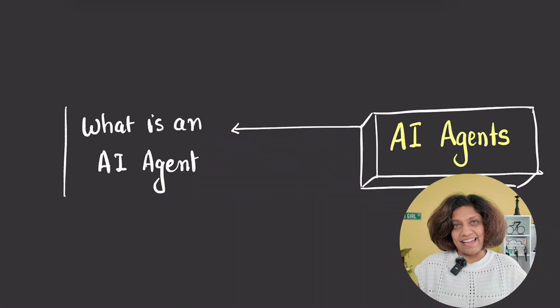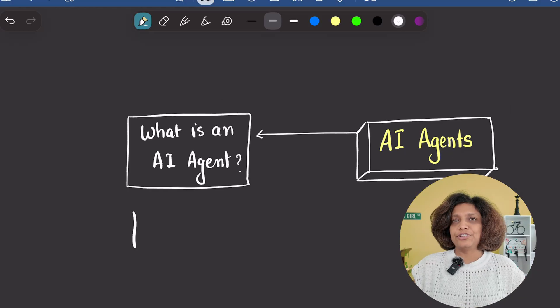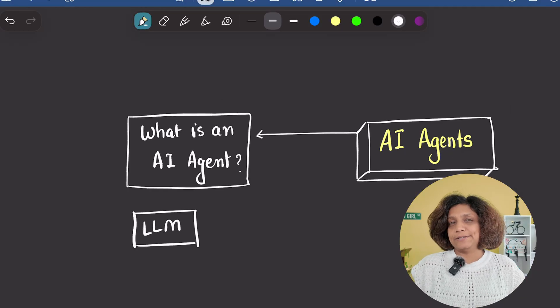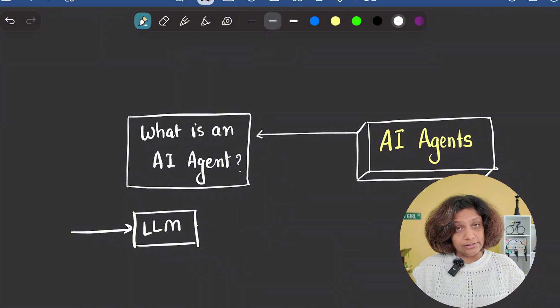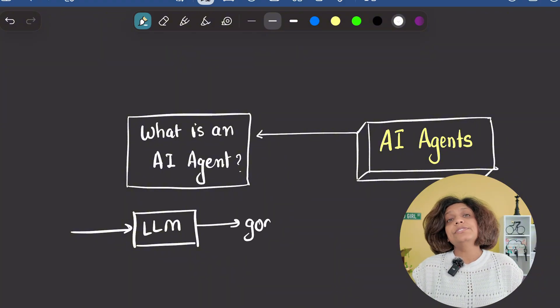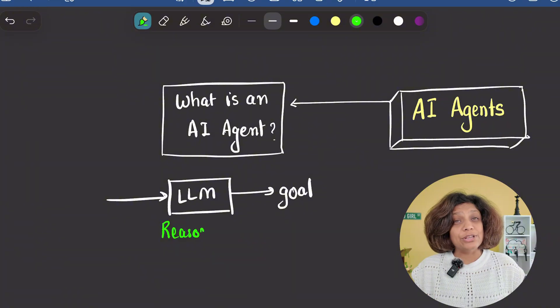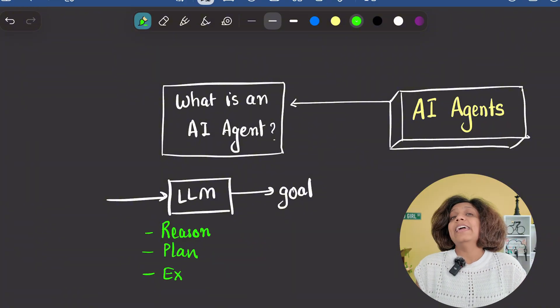What exactly is an AI agent? Here's a simple definition. An AI agent is a system that uses a language model to achieve a user-defined goal. But here's the critical difference that most people miss. AI agents don't just respond. They reason, they plan and execute actions in real world.